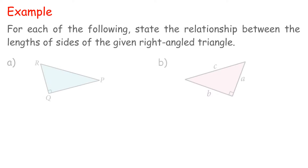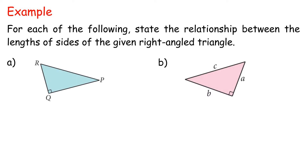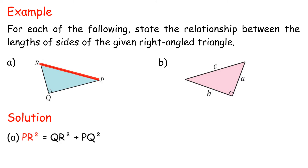Example: for each of the following, state the relationship between the lengths of sides of the given right-angled triangle. Solution. A: PR² = QR² + PQ². B: c² = a² + b².